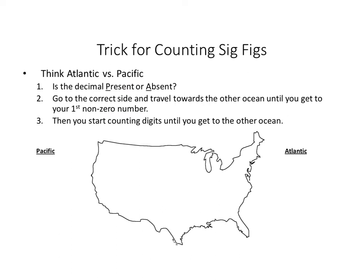Now here's a trick I personally like. Think of a picture of the United States with the Pacific Ocean and the Atlantic Ocean where they belong. You ask yourself: is there a decimal present in the number or is it absent? If it's present, you go to the Pacific side. If it's absent, you start on the Atlantic side. Then you travel towards the other ocean until you hit your first non-zero number, and you start counting from that number towards the other ocean — that tells you how many sig figs you have.